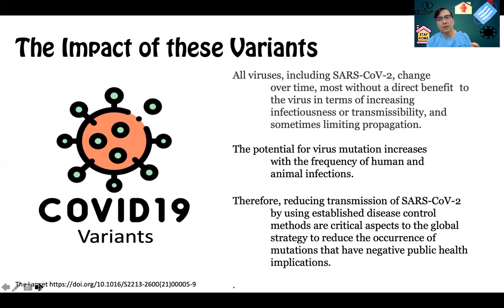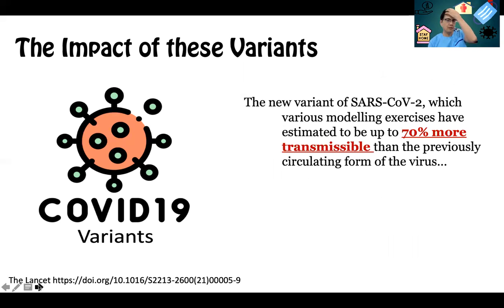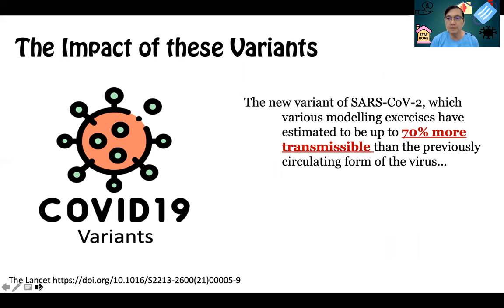Therefore, reducing transmission of SARS-CoV-2 by using established disease control methods will continue to be the critical aspect of the global strategy to reduce mutations that could have a negative public health implication. What we know of this new UK variant is that, based on modeling exercises, it has an estimated up to 70% more transmissibility — meaning it spreads more readily than previously circulating forms of the virus.